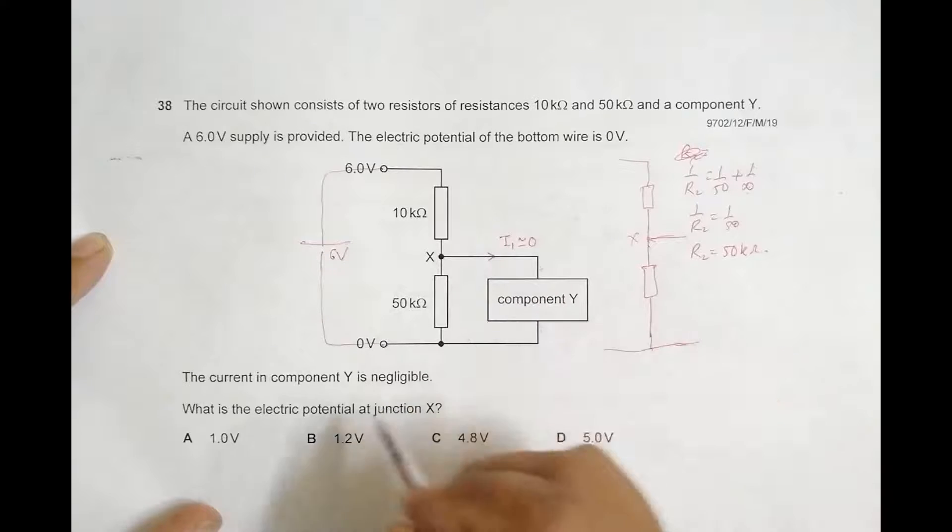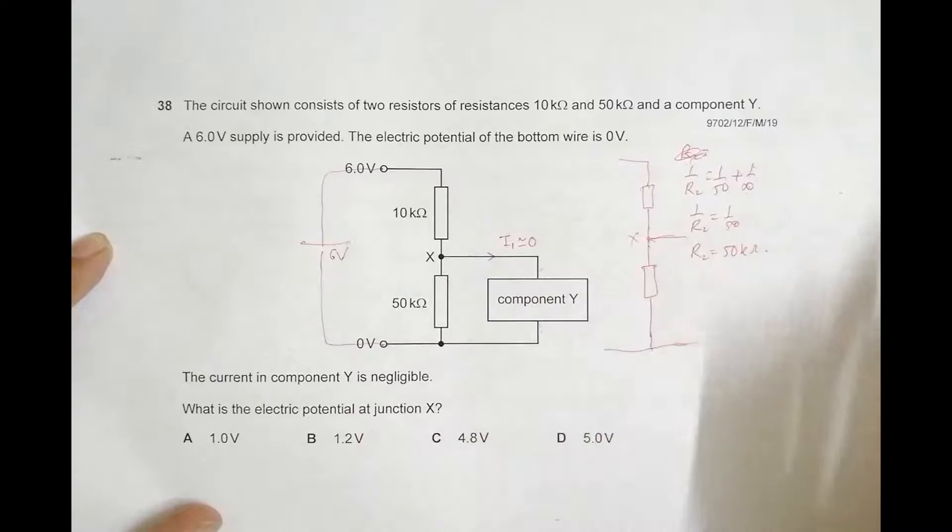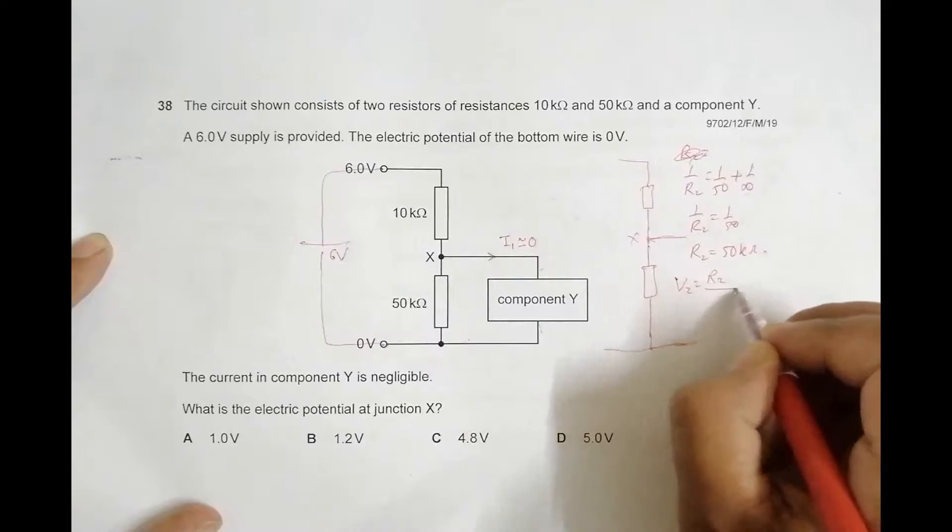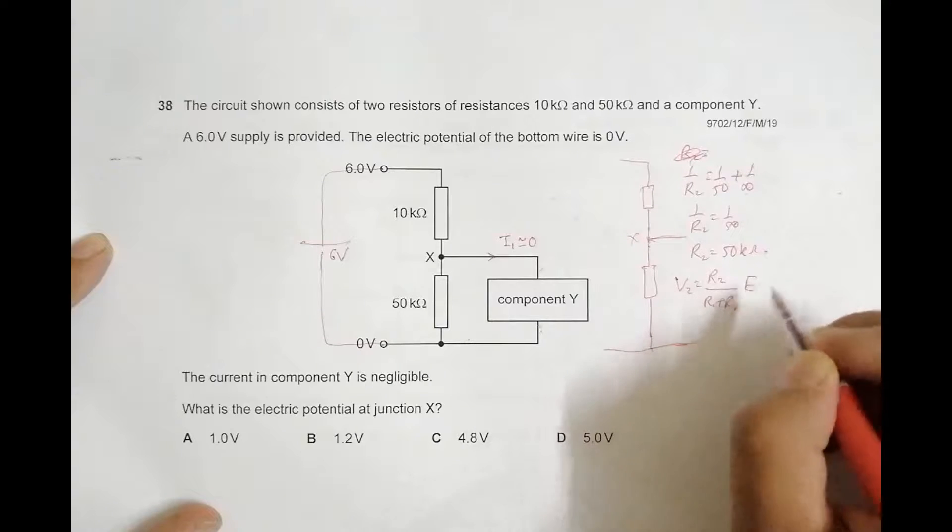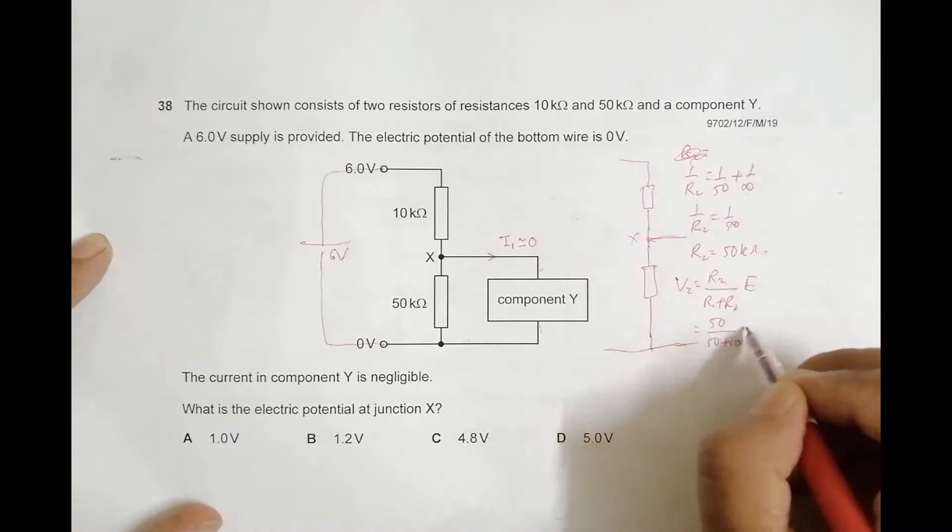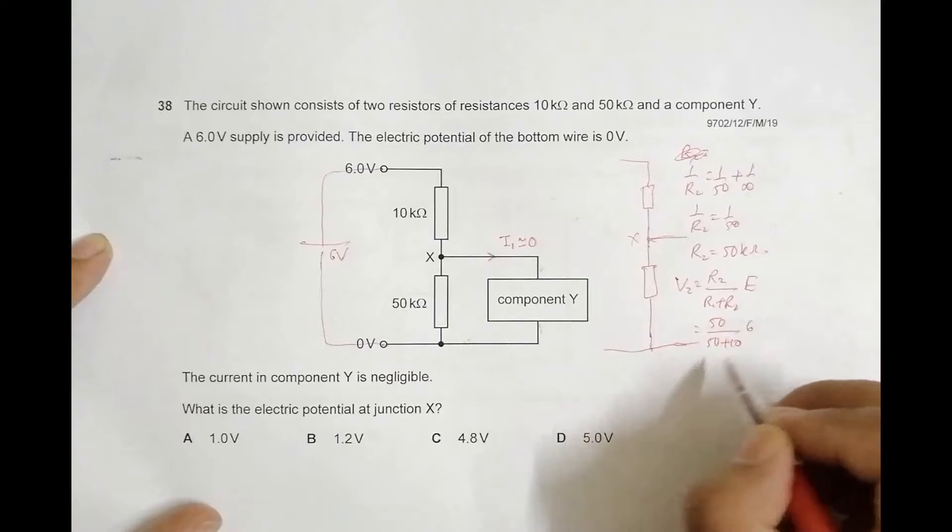Now, according to the voltage divider theorem, we will have V2 equal to R2 divided by R1 plus R2, times E, which equals 50 divided by 50 plus 10, times 6.